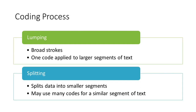Another consideration for coding is how much text gets coded at once. Codes are attached to segments or chunks of data, which can vary in length from one word to a full paragraph or page. Most often, the section of coded text will be somewhere in between — long enough to give context and capture the full idea, but short enough that it doesn't contain extraneous information or multiple ideas that might be better coded separately. Lumping involves broad strokes, coding perhaps a full paragraph or page and applying one code to a larger segment of text. With splitting, you're approaching the data in much smaller chunks, where a paragraph may have multiple codes. You may use both lumping and splitting depending upon your approach.